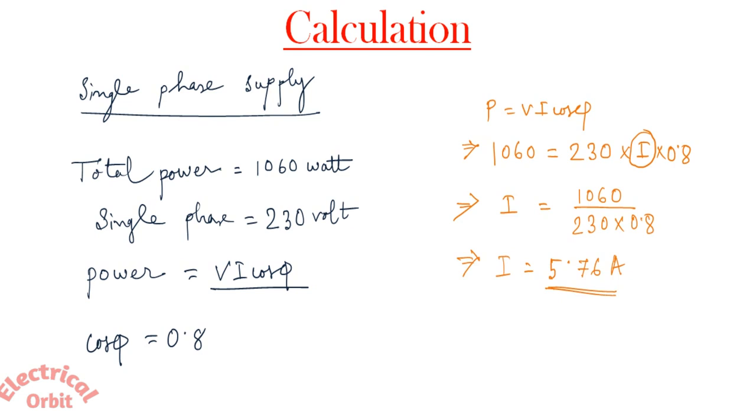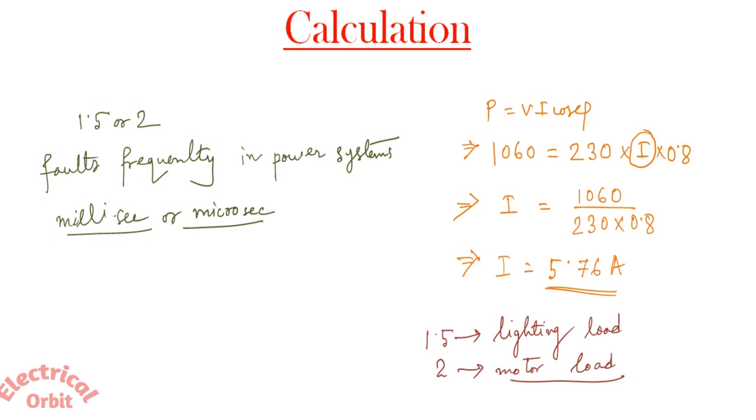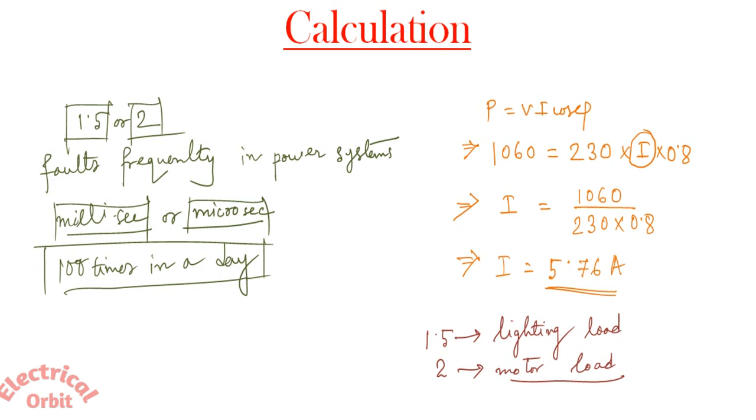Now here two things are very important. First, the value we have achieved by our calculation has to be multiplied with 1.5 for lighting load and with 2 for motor load. The requirement of multiplying this 1.5 or 2 is there are many faults that frequently occur in power system and that sustain for maybe millisecond or microsecond. So if you are not multiplying with these safety factors, then your breaker or MCB will go on tripping hundreds of times in a day. And for the sake of this millisecond or microsecond fault, your system is not going to be burnt out or there is any kind of losses that you will encounter. So this is very important factor for that it is multiplied.